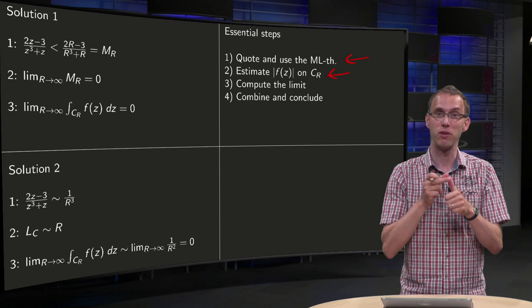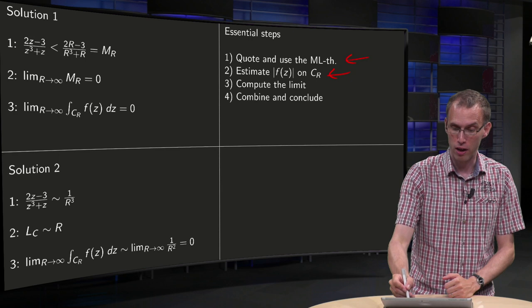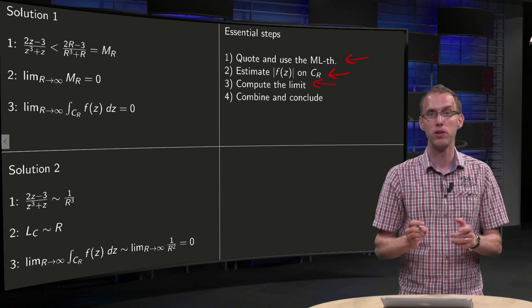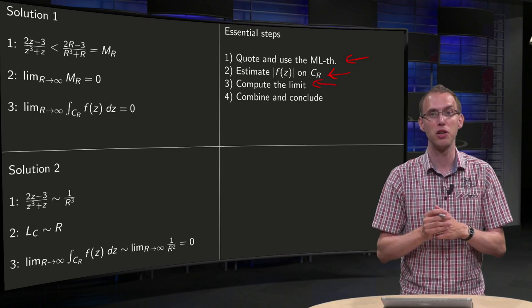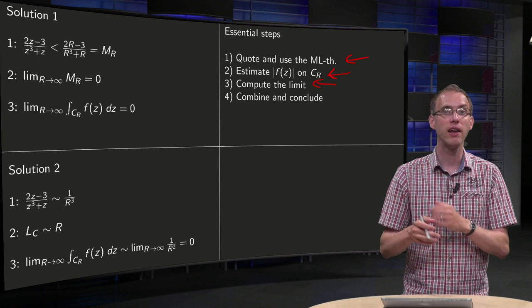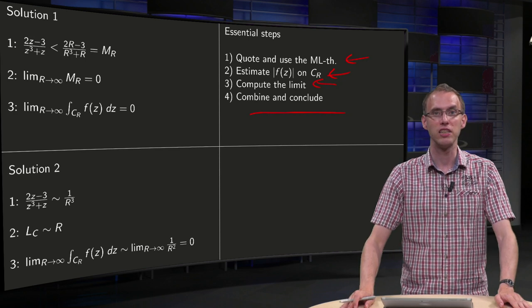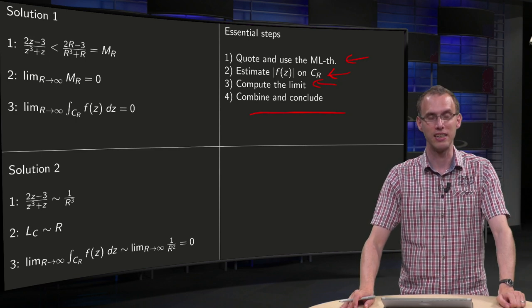Two things, you have to estimate the norm and it has to be on CR. Then compute the limit properly. It was not that difficult in this example, but you have to take one or two steps, so do that properly. And then you can wrap up, combine everything and conclude. So those are the four essential steps in an exercise like this.